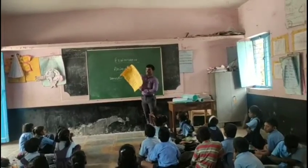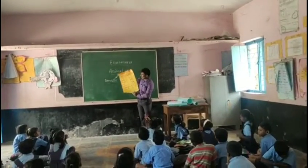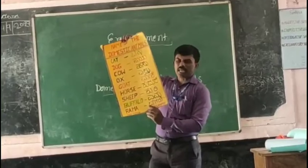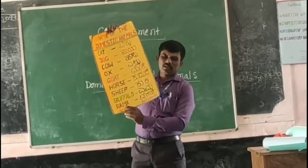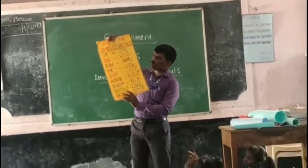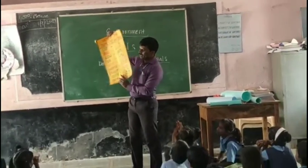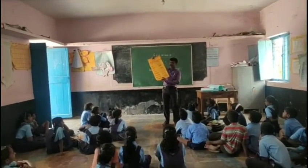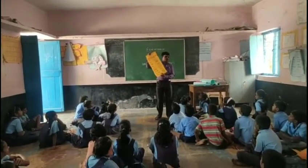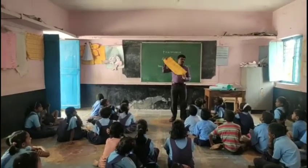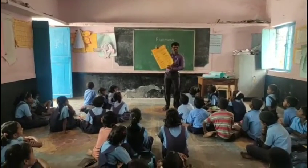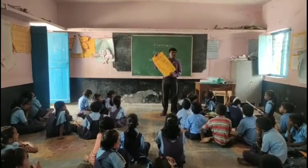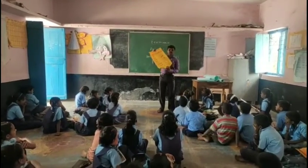So the list of the names of the domestic animals, we can see here. These are the domestic animals. First one is the cat. For what purposes are we nurturing cat? What is the use of cat?